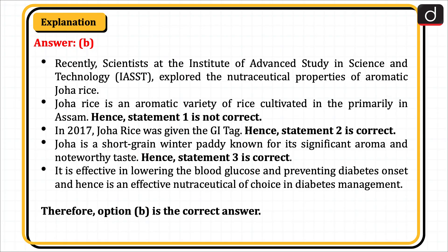Recently, scientists at the Institute of Advanced Study in Science and Technology explored the nutraceutical properties of aromatic Johar rice. Johar rice is an aromatic variety of rice cultivated primarily in Assam — hence Statement 1 is not correct. In 2017, Johar rice was given the GI tag — hence Statement 2 is correct. Johar is a short-grained winter paddy known for its significant aroma and noteworthy taste — hence Statement 3 is correct. It is effective in lowering blood glucose and preventing diabetes onset, making it an effective nutraceutical of choice in diabetes management. Therefore, Option B is the correct answer.